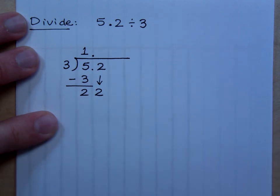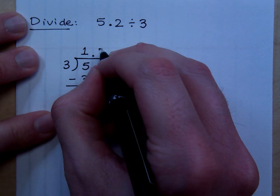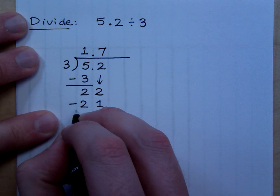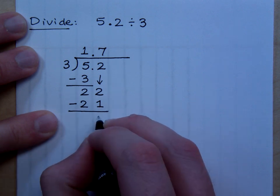So, 3 goes into 22 how many times? Okay. So, there's 7. 7 times 3 is 21. And I get a remainder of 1.